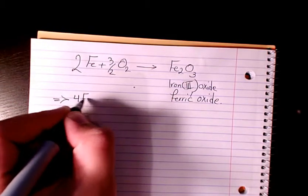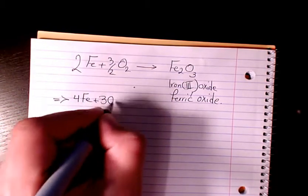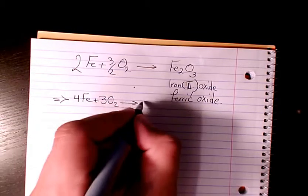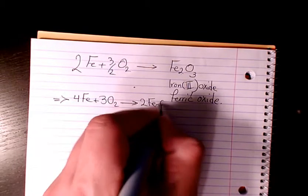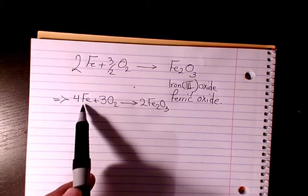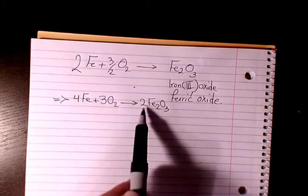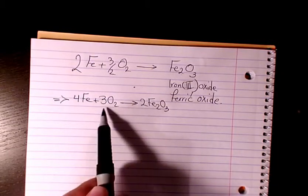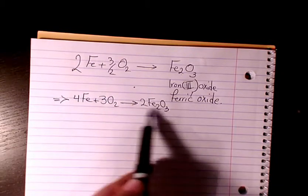So it's going to make it 4Fe + 3O2 gives you 2Fe2O3. Now you multiply everything by two, so Fe here we have four of them on each side. Six oxygen on one side and six oxygen on the other as well, because 2 times 3.